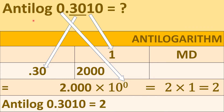Now let us find out the anti-log of 0.3010. Here 0 is the characteristic and 3010 is the mantissa. After the decimal you take two digits; here 30 are those digits. In the row of 0.30, under column 1, the number 2000 is there. That 2000 you write as 2.000, placing the decimal after the first digit from the left side.